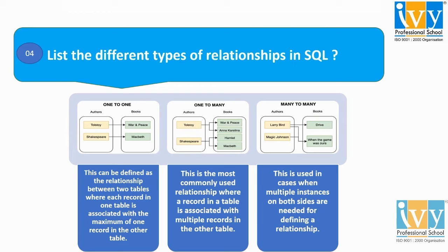Coming to the next one: one-to-many. This type of relationship is where a record in a table is associated with multiple records in another table. Here also we have two tables, author and book, and a particular author is associated with more than one record in the book table.